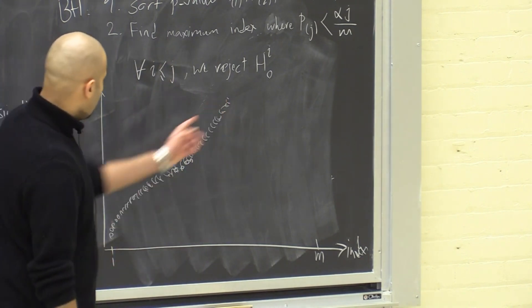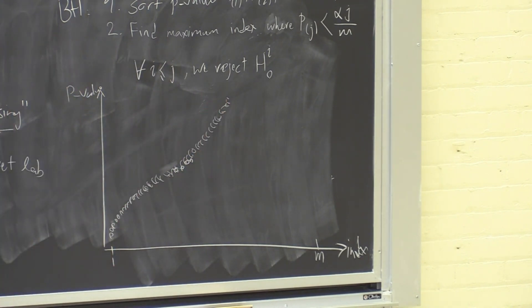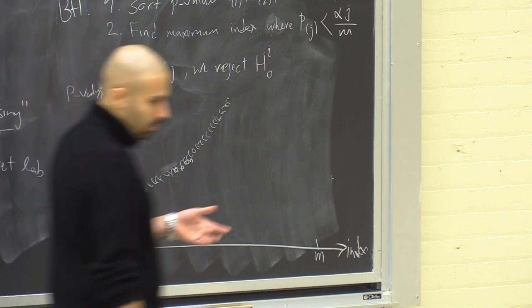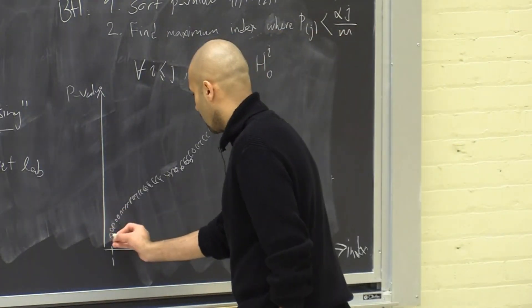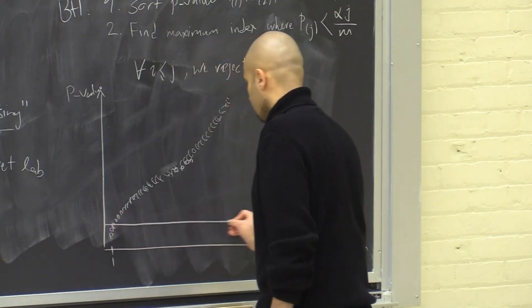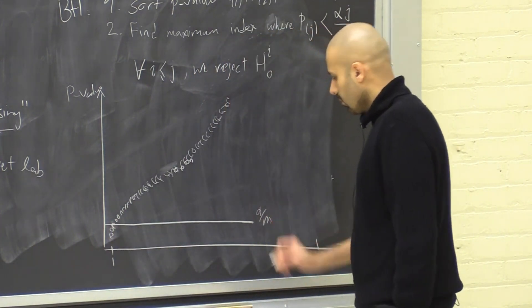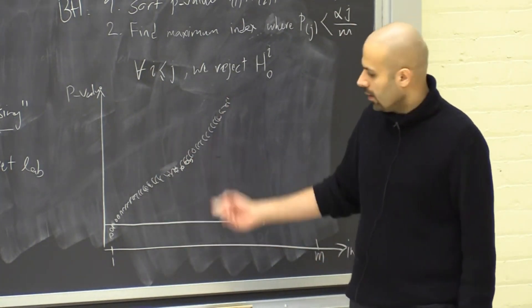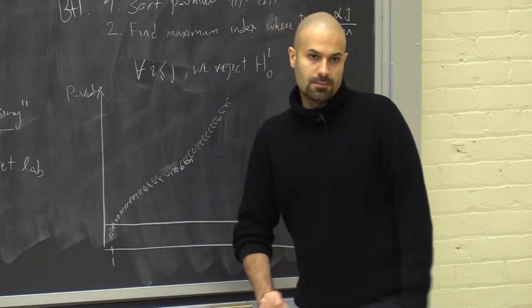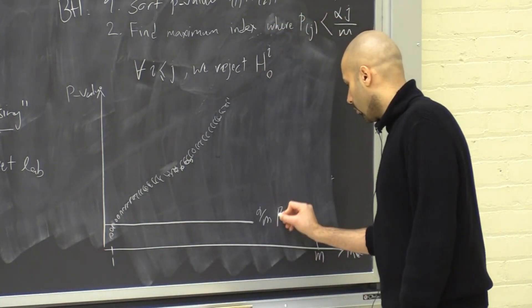So here with Benjamini-Hochberg, let me first give you an example with Bonferroni and Holm method. With Bonferroni, it's something like this. There is just some horizontal line that is equal to alpha over M. And then for most of these tests, they will be above this line and we fail to reject them. So we're going to reject this, this, and this. This method is Bonferroni.